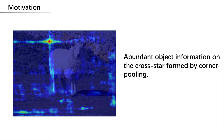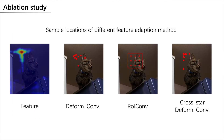Cross-star deformable convolution learns the convolution sampling points from the geometric structure of the feature cross-star formed by corner pooling. It can align sampling points with the cross-star shape and further enhances the object feature at corner locations.